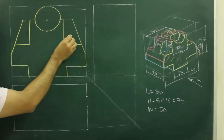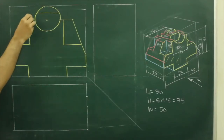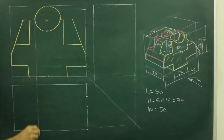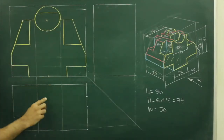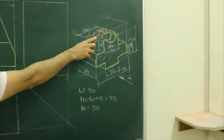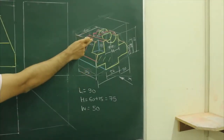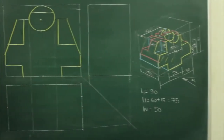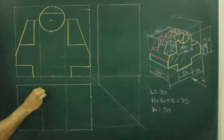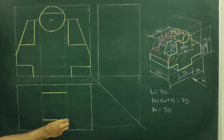Same on the other side. So we are done with front view. Now to draw top view, we will project from the front. If you see this part in top view, it's 30. The total width is 50. 50 minus 30 would be 20, so 10 on both the sides. We can leave 10 from here and draw a dark line. Same way 10 from here and draw a dark line.